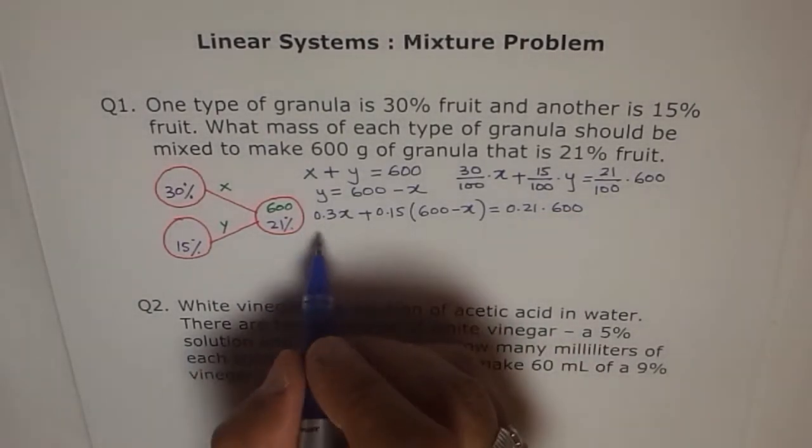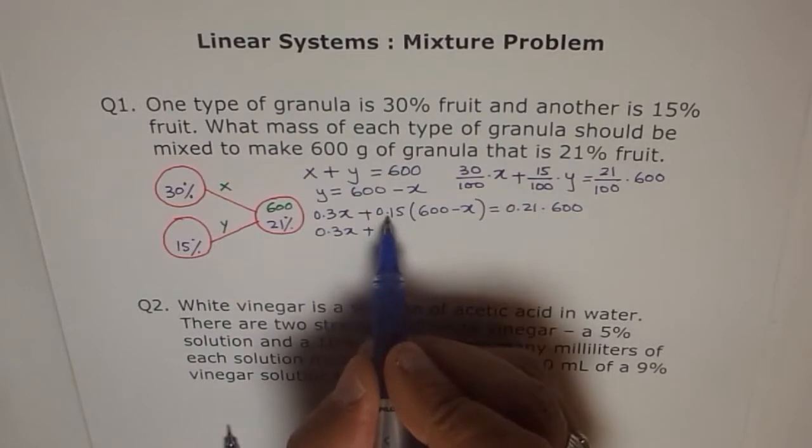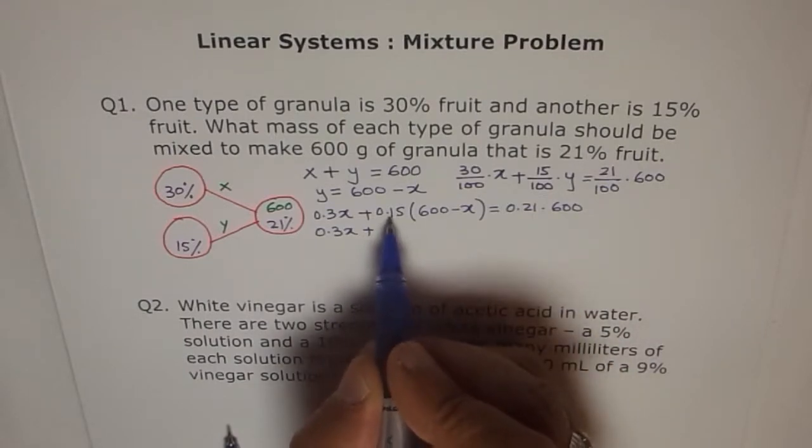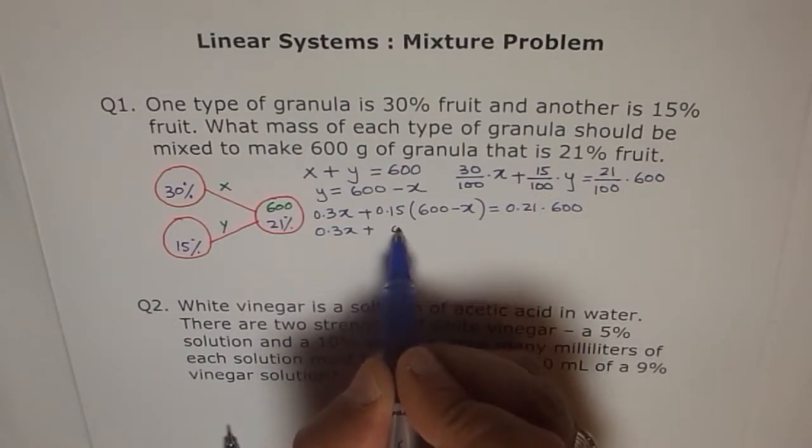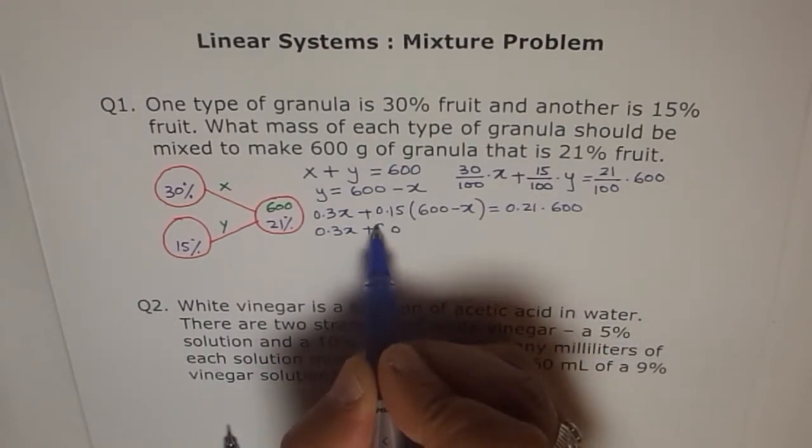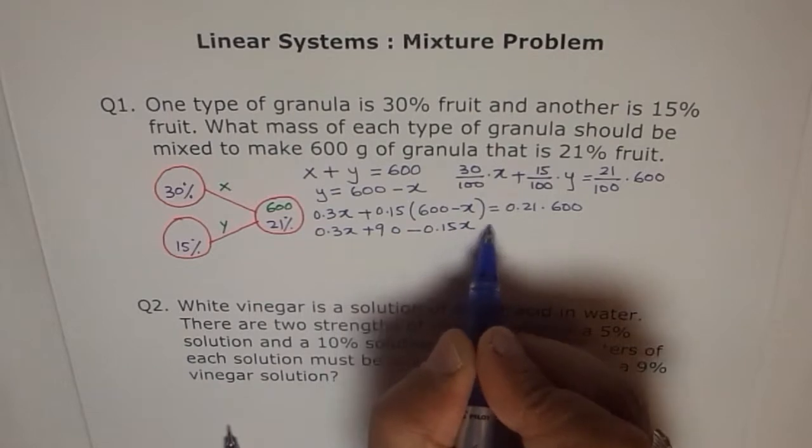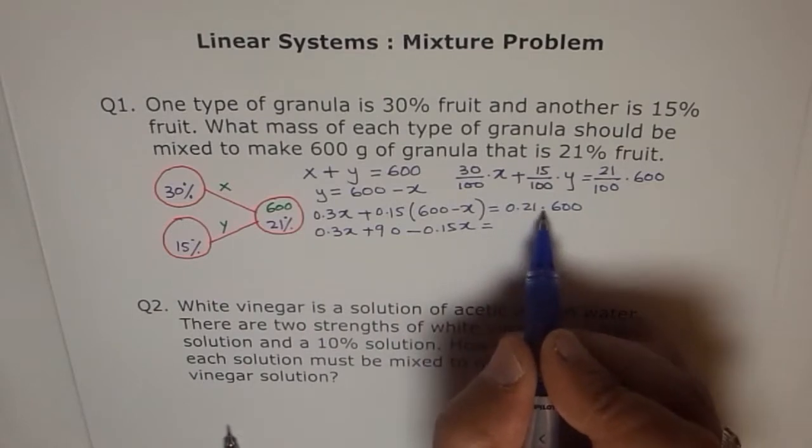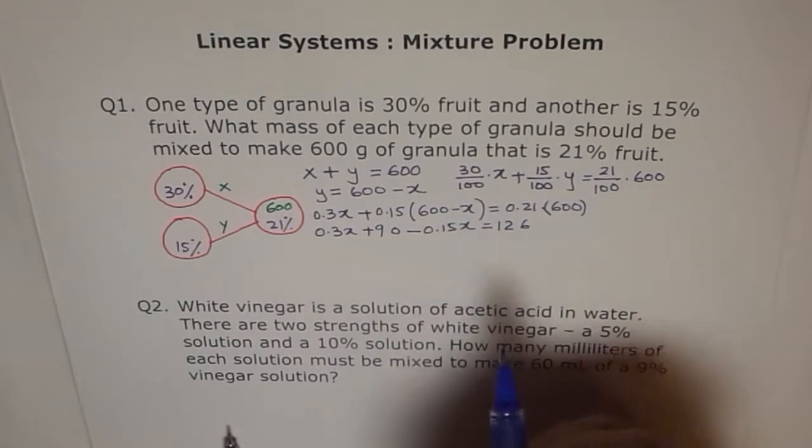Let's do it. 0.3x, and this is the distributive law. Let's multiply 0.15 times 600 and x. 0.15 times 600: 100 will make it 15, and then we can multiply 15 by 6. 6 times 5 is 30, and 6 times 1 is 6 plus 3, so we get 90. So here we will get 90. Let's put this in brackets for clarity. On the other side, 0.21 times 600: decimal to the other place, we get 21 times 6. 6 times 1 is 6, 6 times 2 is 12, so we get 126.